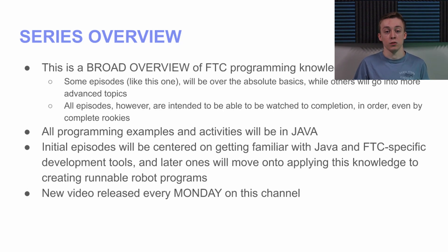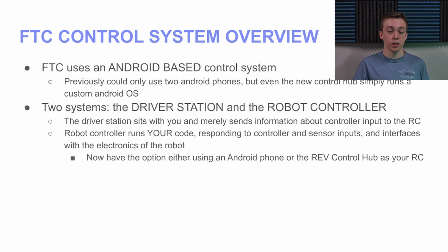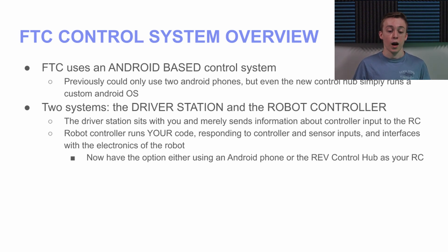Let's get started with the FTC control system overview. FTC uses an Android-based control system — I'm sure many of you have used Android in the past on a mobile device. It's an open-source operating system now owned by Google. Previously in FTC, you could only use two Android phones — one for the driver station and one for the robot controller. But now you have the option of using the Control Hub, which has an Android controller on it as your robot controller. This is really what I'm going to recommend you use for this season.